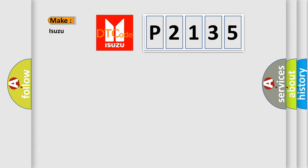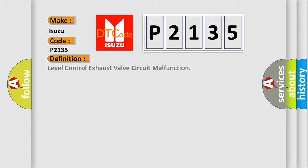So, what does the diagnostic trouble code P2135 interpret specifically? The basic definition is level control exhaust valve circuit malfunction. And now this is a short description of this DTC code.